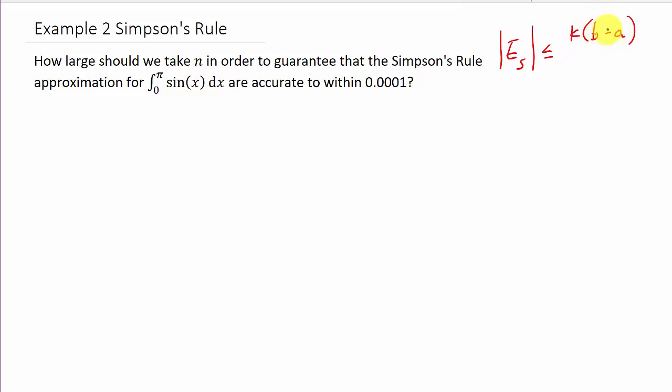Alright, so remember for Simpson's rule it's k times (b - a)^5, which we just looked at all this, over 180n^4. And we also know that the absolute value of the fourth derivative is less than or equal to k. So we need to know what a and b are and we need to know what k is in order to solve for n. Well, a and b, that's easy. That's 0 and π. That's the limits on your integral.